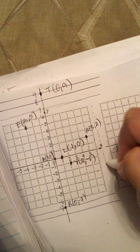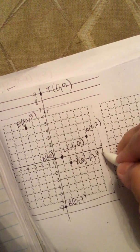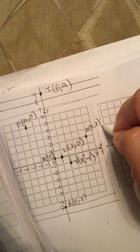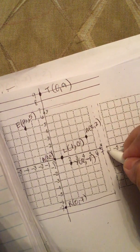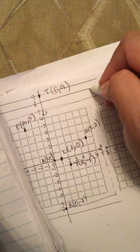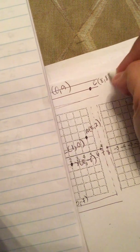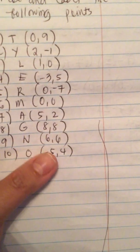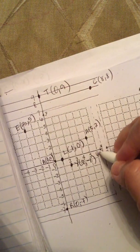We need more squares. Six, seven, and one more square — eight. So this is eight. Eight comma eight — we go up to eight, right here. So this is the point G: eight comma eight.